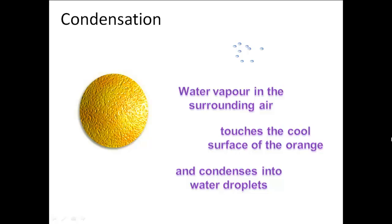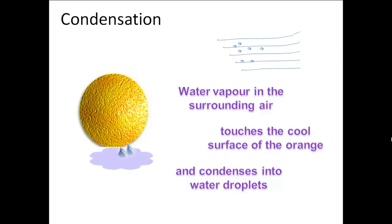The same can be seen with a fruit — a lemon or orange taken from the refrigerator and placed on a table. After a few seconds, we observe water droplets on its surface. The principle is the same: water vapor in the surrounding air touches the cool surface of the orange or lemon and condenses into water droplets.